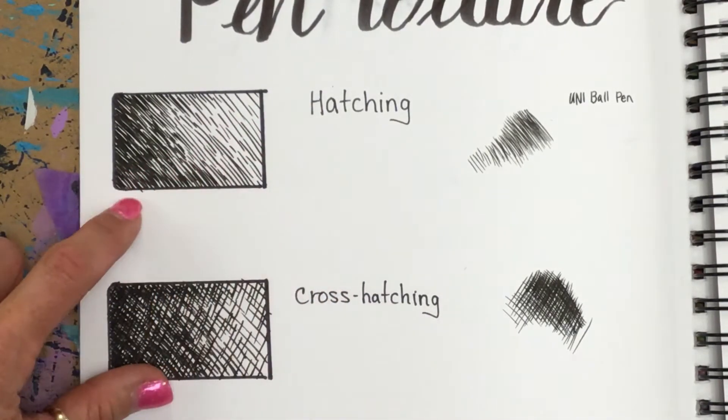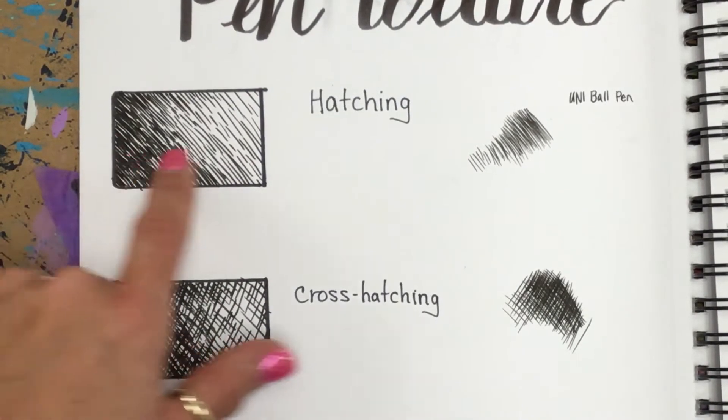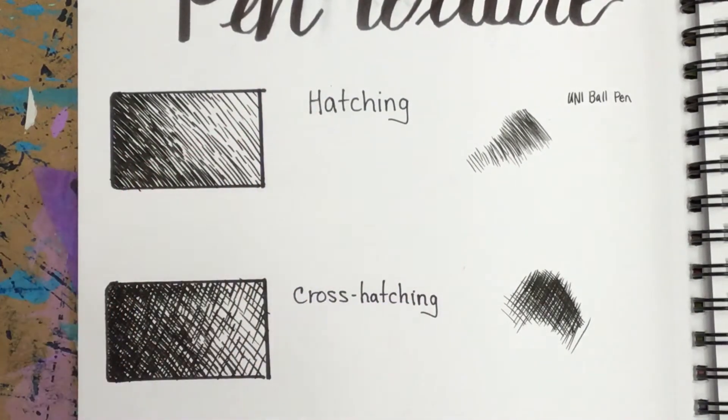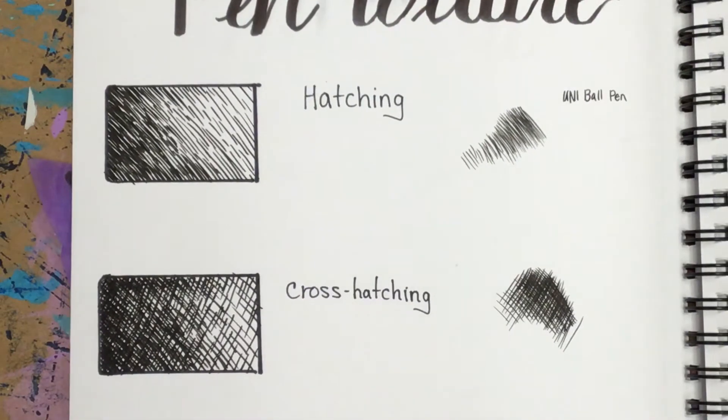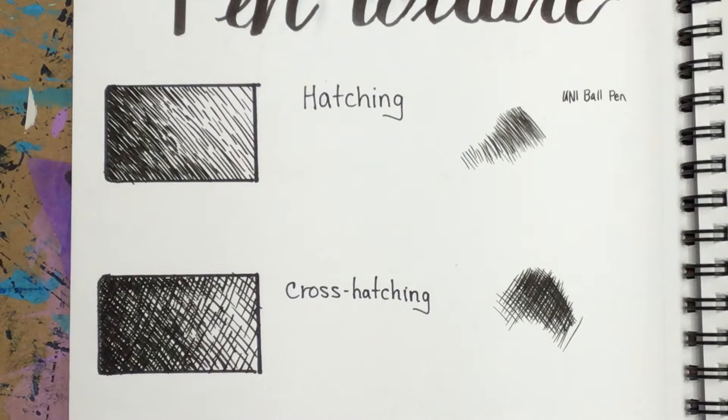I would not start at the super dark, making them super dark right away without putting those others on there. As you look at all these, if you kind of squint your eyes while you're working it'll give you an idea if you are doing a gradual shade or if it goes from really dark to really light fast.